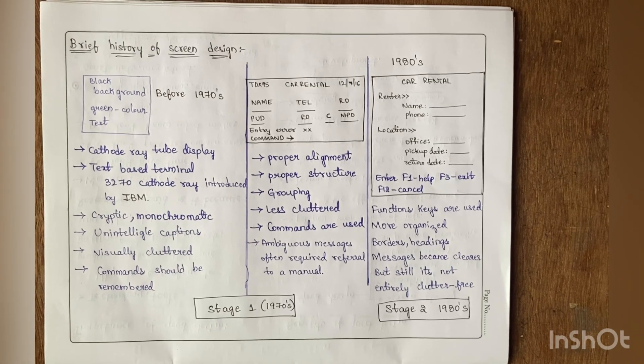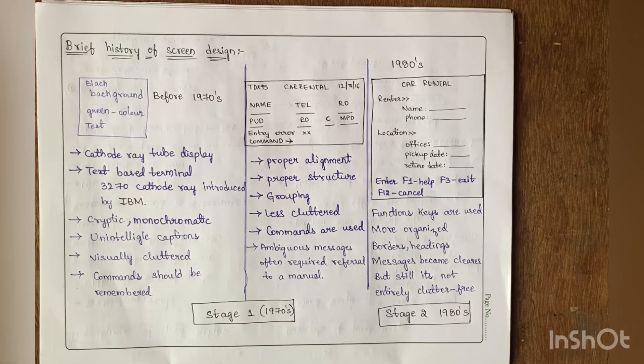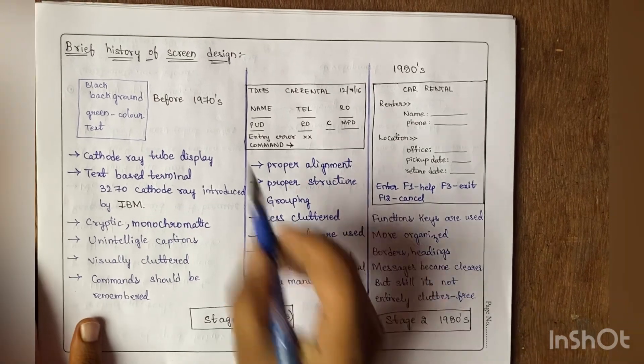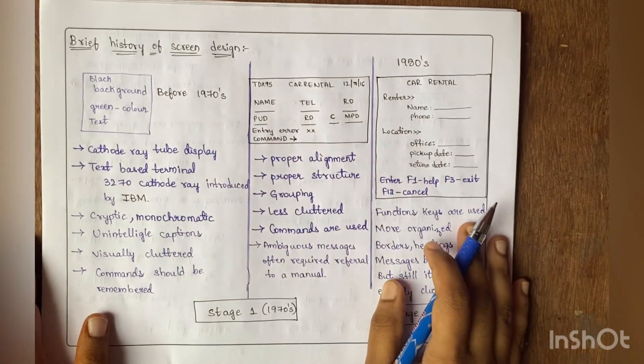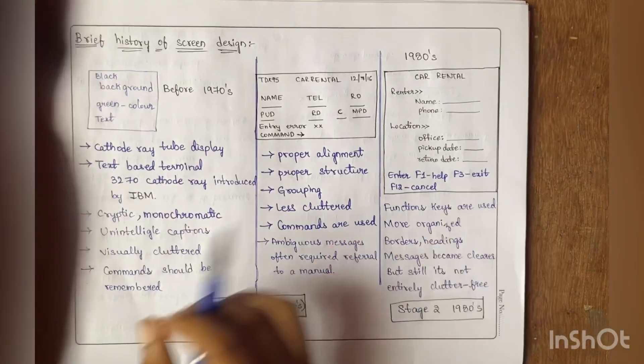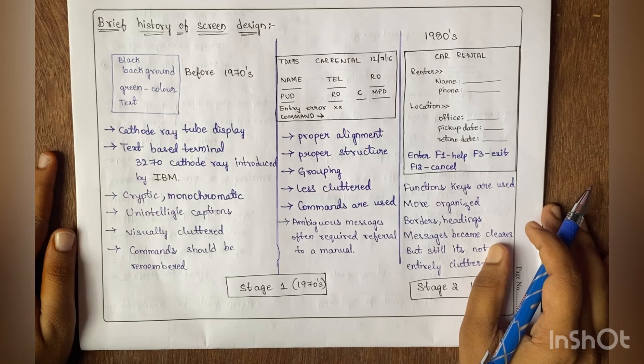Hi everyone, welcome back to my channel. In this video, I'm going to explain the brief history of screen design—the evolution of screen design. Before 1970s, screens had black backgrounds with green color text. They were completely cathode ray tube displays, first introduced by IBM.